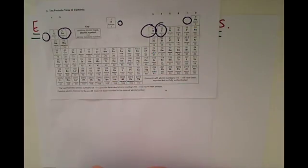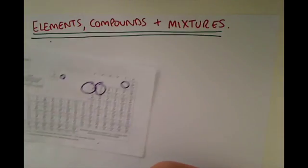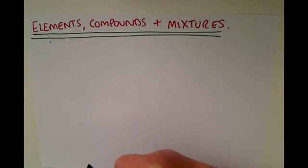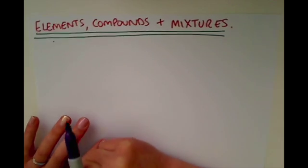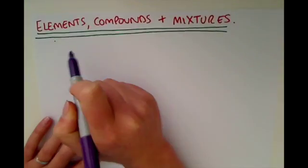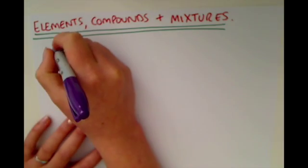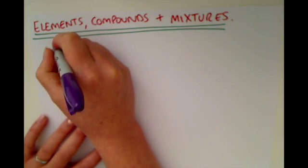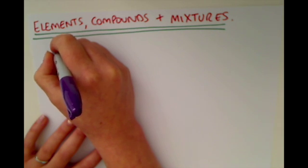So that will help us understand the next three words, which are elements, compounds and mixtures. As we said, the elements are in the periodic table — they are different types of atoms.